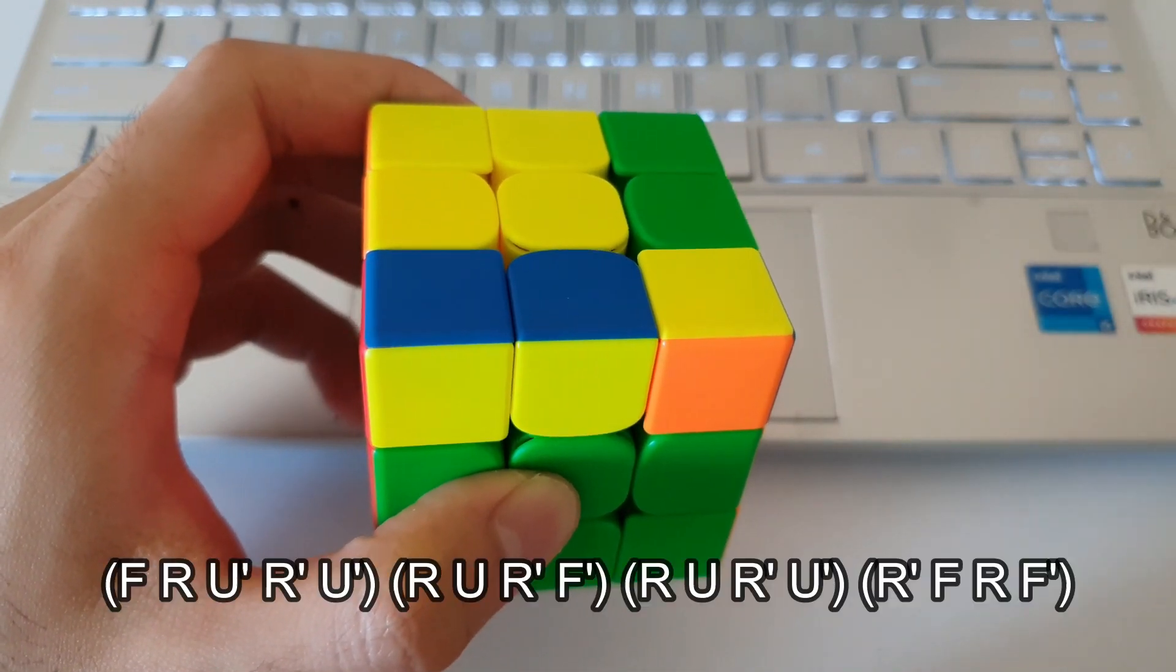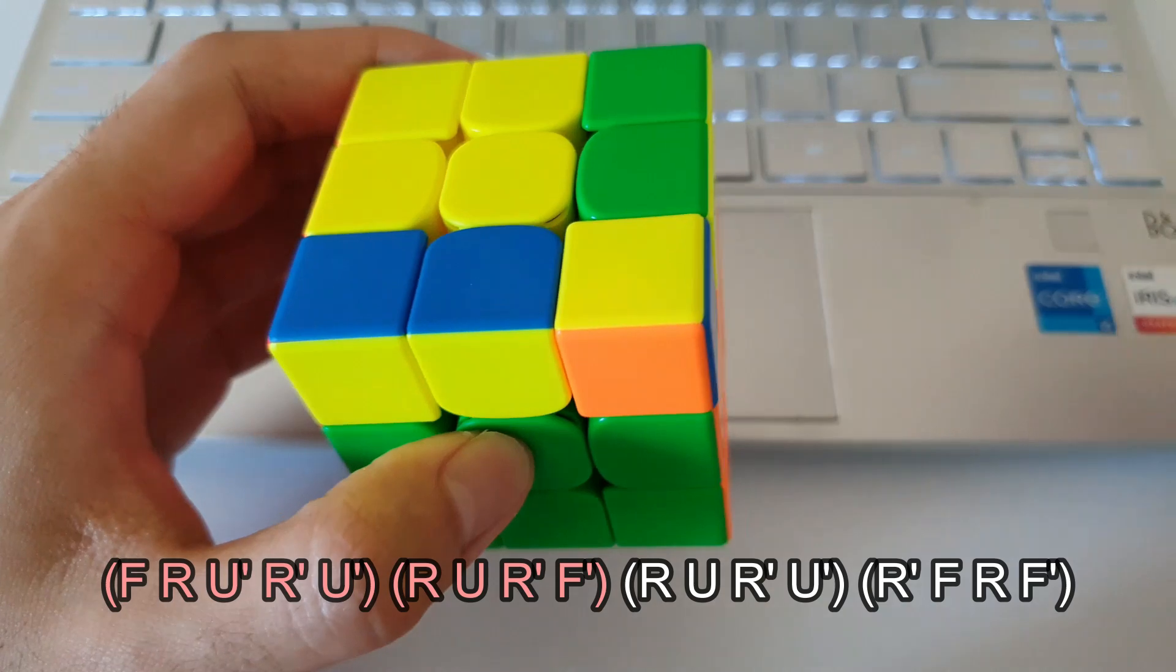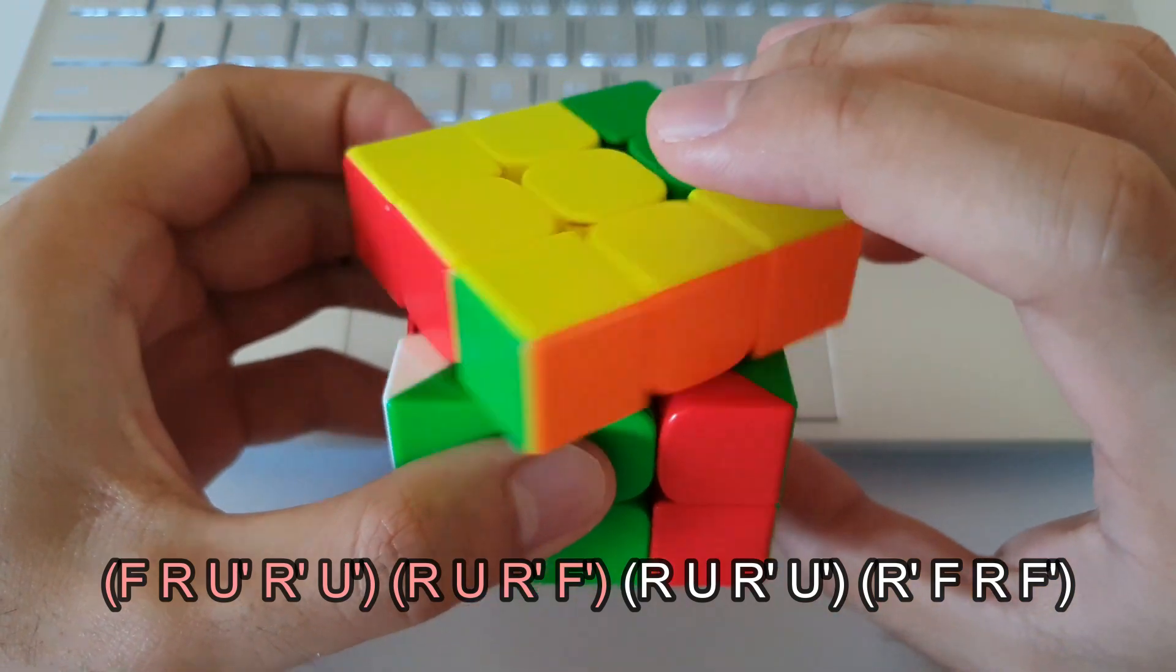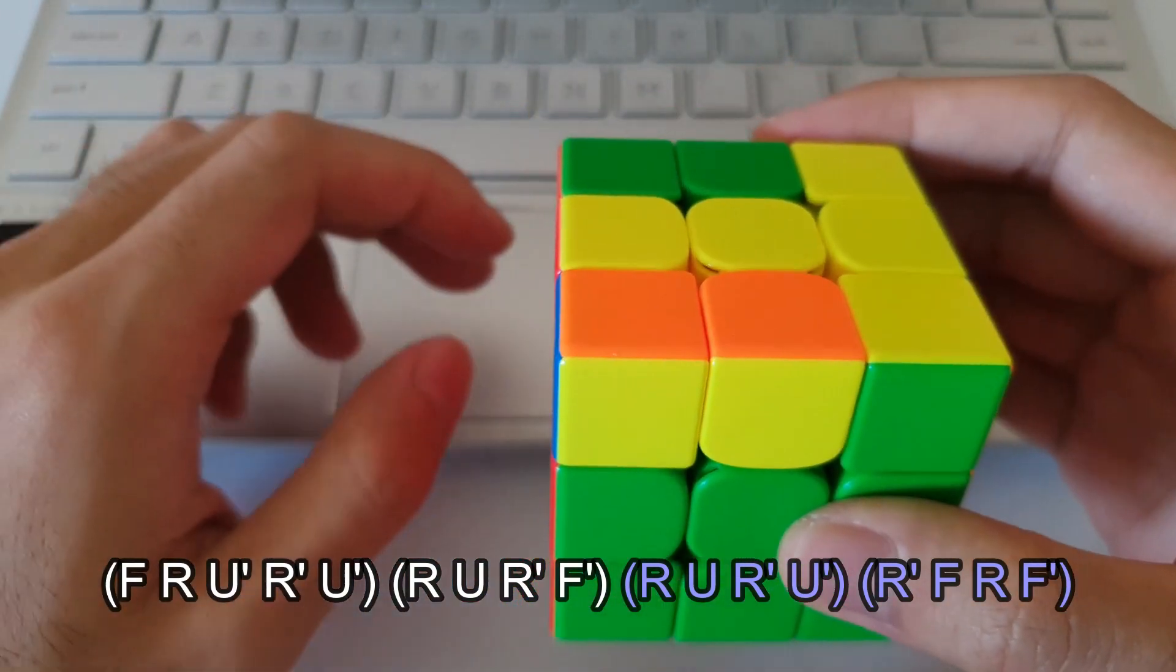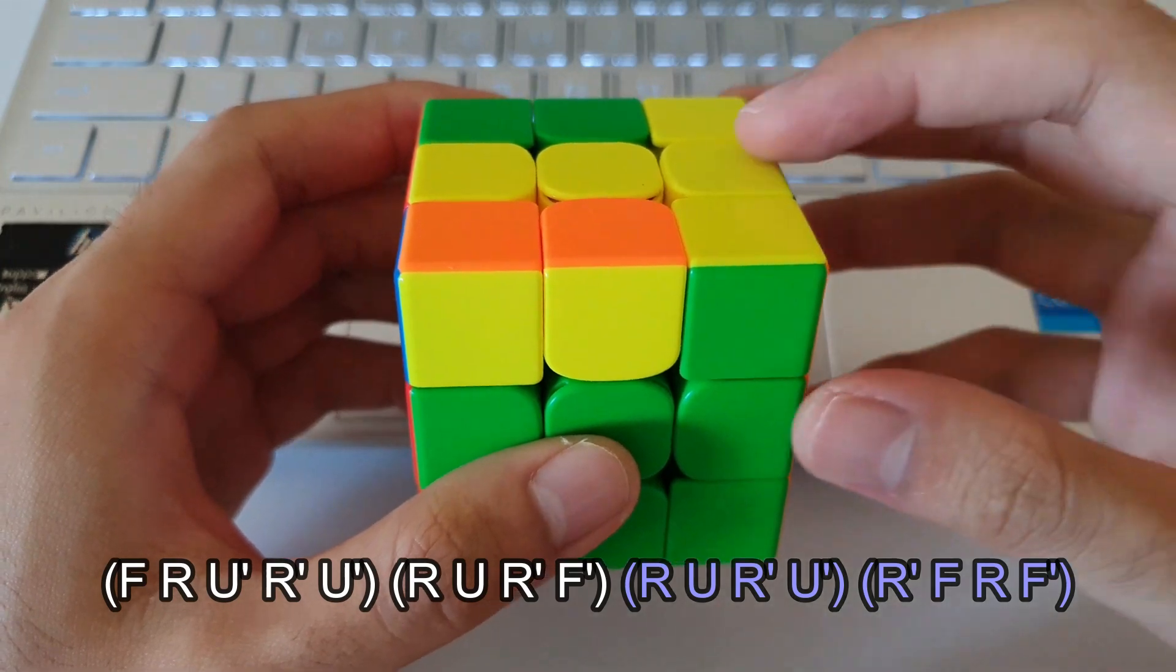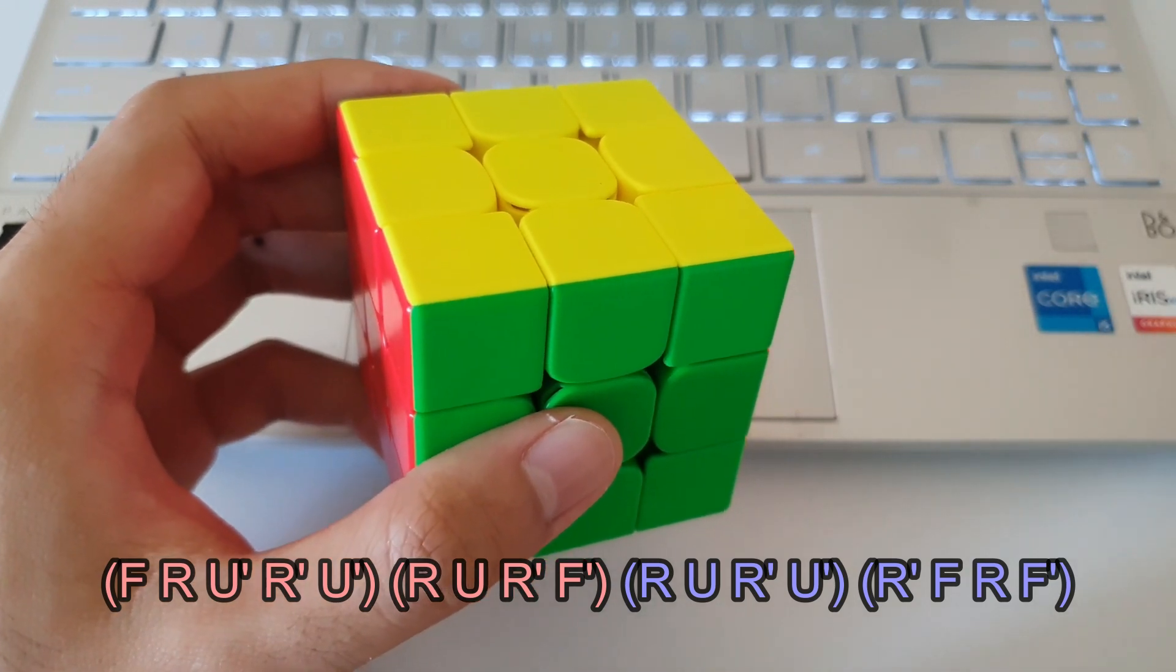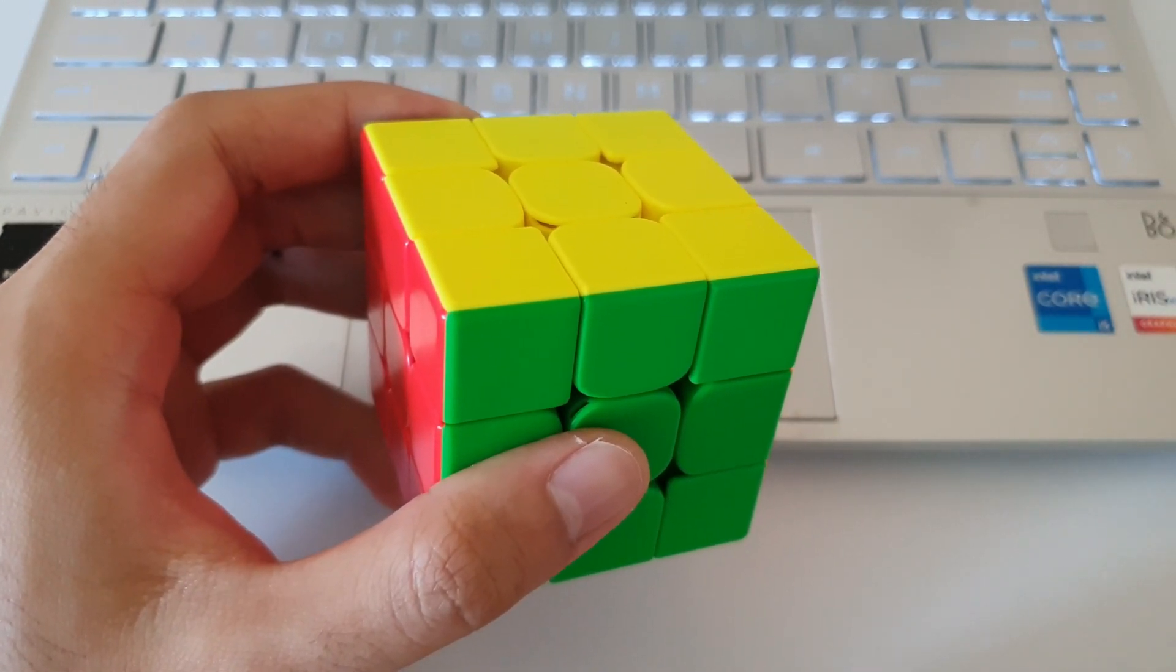Also, this is just a side note, the Y-perm algorithm is actually made up of two OLL algorithms, so the first half of the Y-perm actually solves this particular OLL case, so this is known as the fish shape, and you can use the first half of the Y-perm, which is the part in red, to solve this particular case. Also the second half of the Y-perm is, well, also an OLL case, so it's this particular T-shape right here, so the part in blue actually solves this particular OLL case. So this is just a side note, so for those of you who have learnt the Y-perm and you haven't learnt full OLL yet, well, learning this algorithm, you've already learnt two OLL cases, which is definitely a good head start for you guys in learning full OLL.